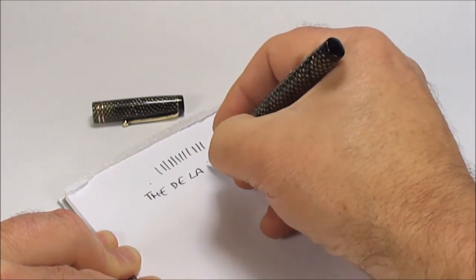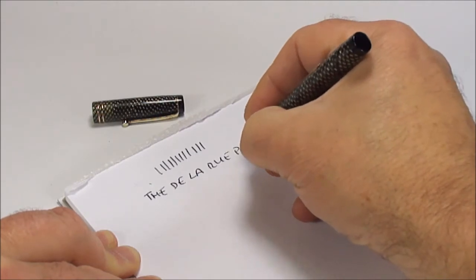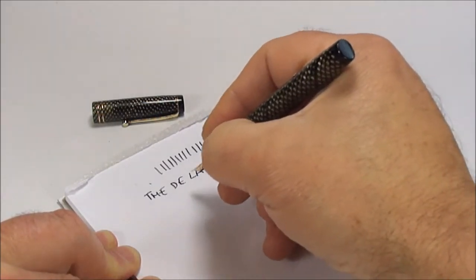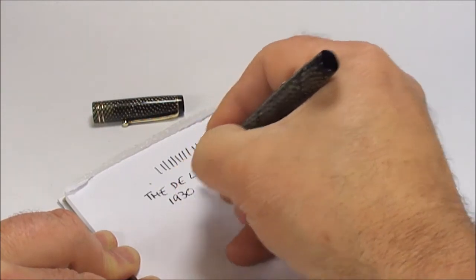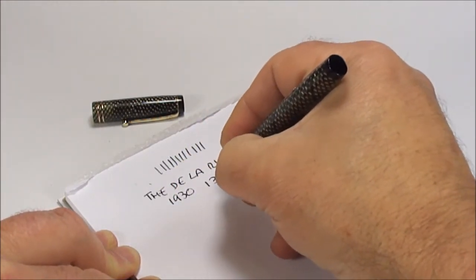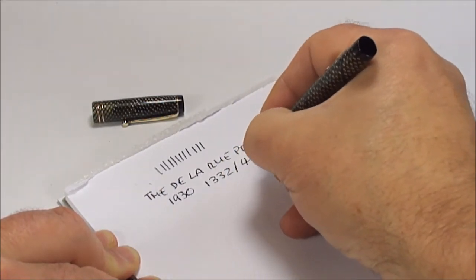So we have the De La Rue, De La Rue pen. As we said, we're dating the pen from the 1930s. This model is the 1332-44.